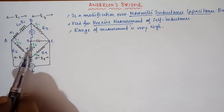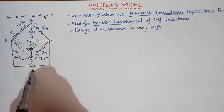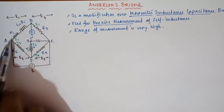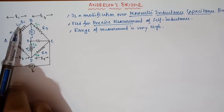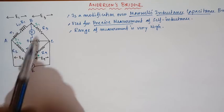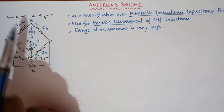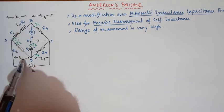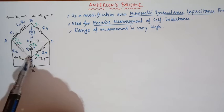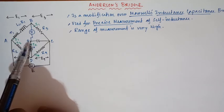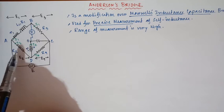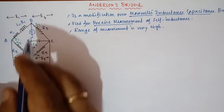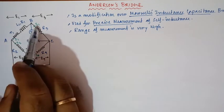The excitation is capital E, which is AC in nature, given to the system. Due to this, i1 and i2 are the two branch currents flowing through two different branches, producing voltage drops e1, e2, e3, and e4. Remember, just like in other bridge analyses, we cannot simply write e1 equal to e2 here, because e2 does not represent the voltage drop of the total branch up to point O.